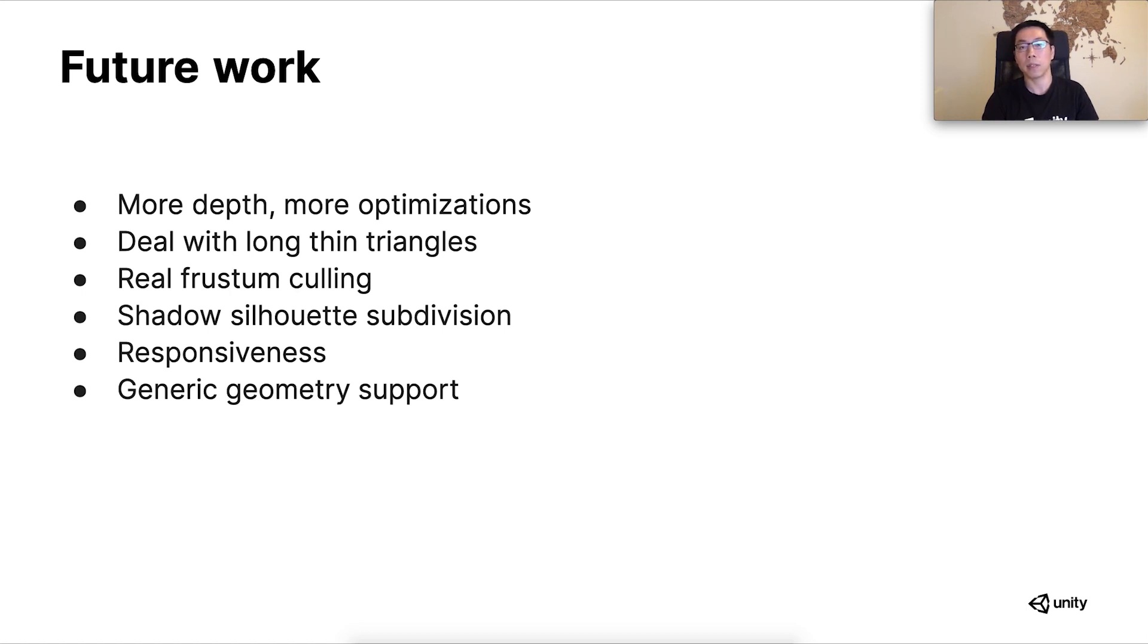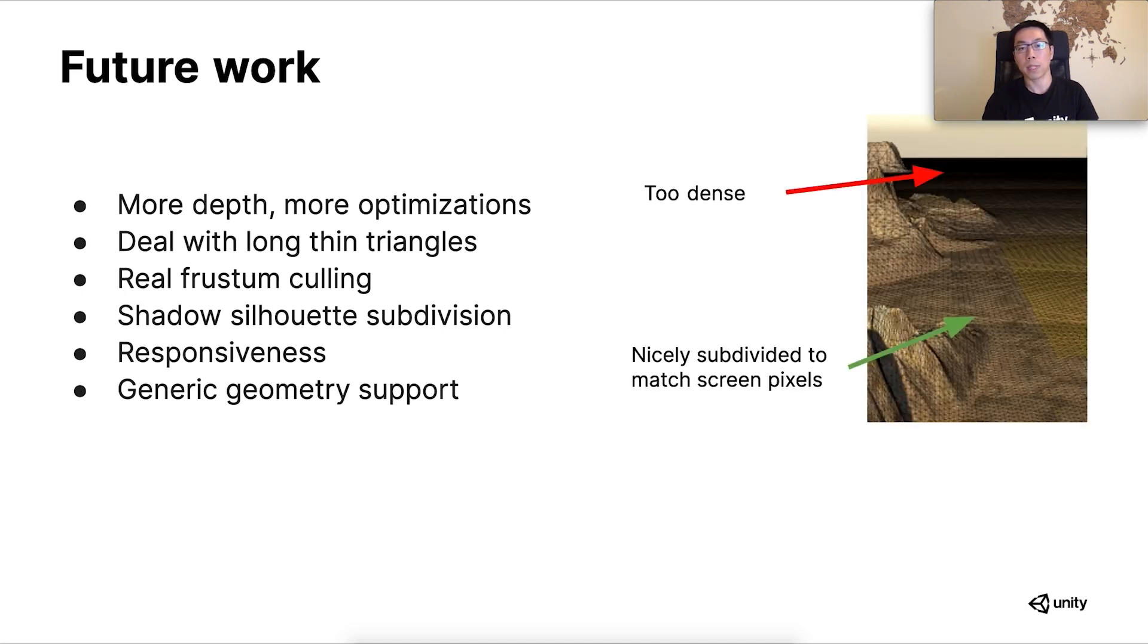The team is eager to explore the technique more in the near future. Here lists a few things that we will be focusing on. First, the team is aiming for getting more depth in the tree hierarchy, so we rely less on the meshlet to reach our target's triangle density. In order to do that, we need to optimize the system more, because each additional depth would double the memory and time cost. We want to find a way of avoiding the subdivision of flat triangles.